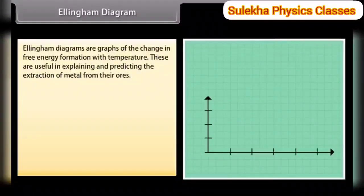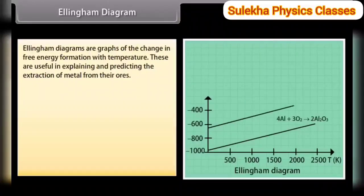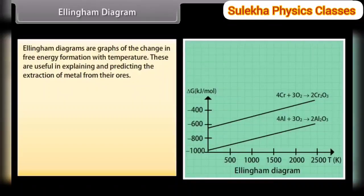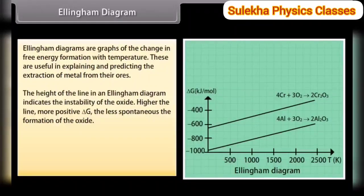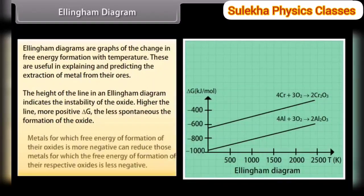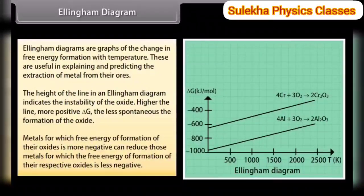Ellingham diagrams are graphs of the change in free energy of formation with temperature. These are useful in explaining and predicting the extraction of metals from their ores. The height of the line in an Ellingham diagram indicates the instability of the oxide — the higher the line, the more positive ΔG and the less spontaneous the formation of the oxide. Metals for which the free energy of formation of their oxides is more negative can reduce those metals for which the free energy of formation of their oxides is less negative.